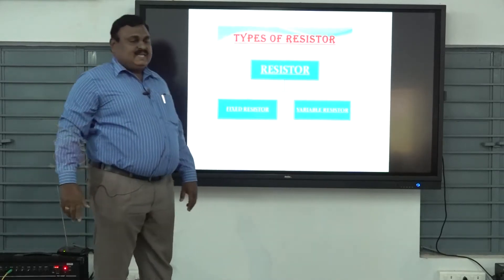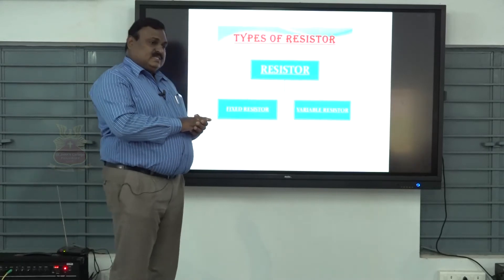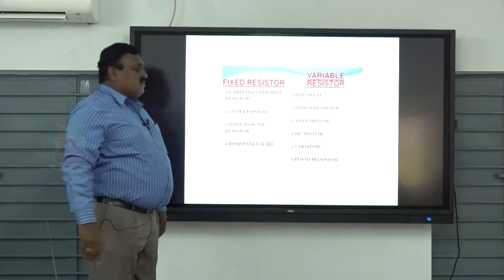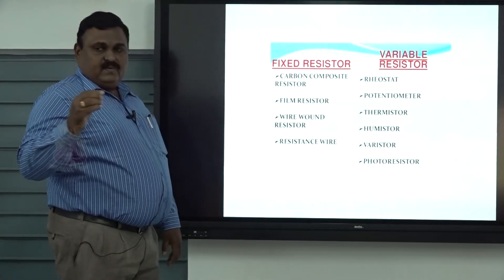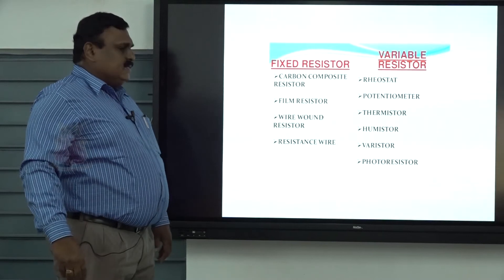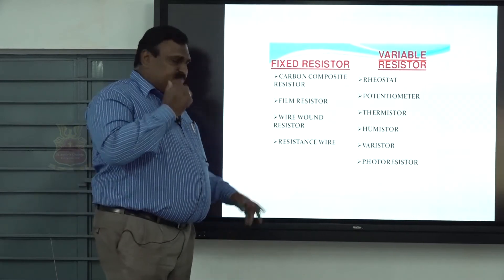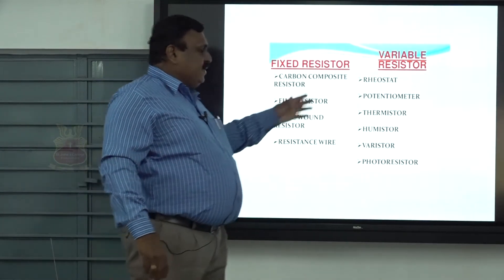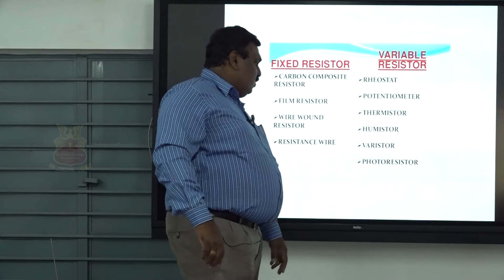What are the types of resistor? There are two types: one is fixed resistor and another one is variable resistor. The fixed resistors include: carbon composite resistor, film resistor, wire wound resistor, and resistance wire. The variable resistors include: rheostat, potentiometer, thermistor, and photo resistors.